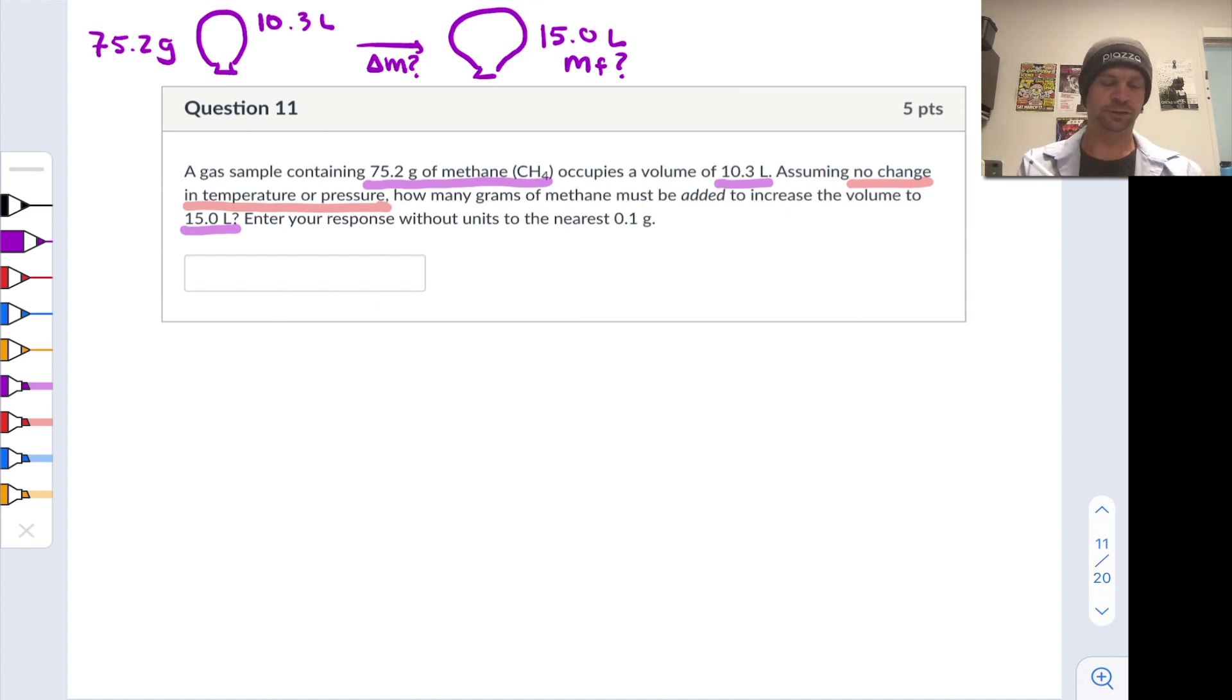Probably the most systematic way to go about it is to convert the mass to moles and then think about the relationship between moles and volume for an ideal gas at constant pressure.